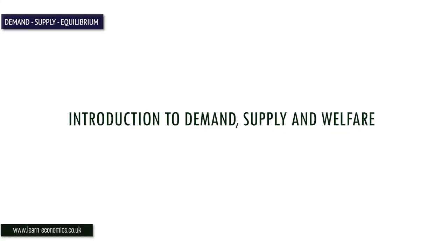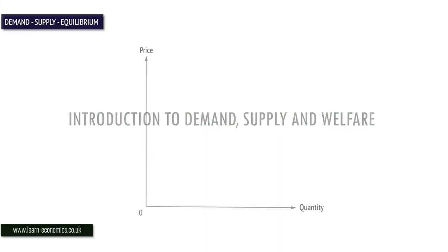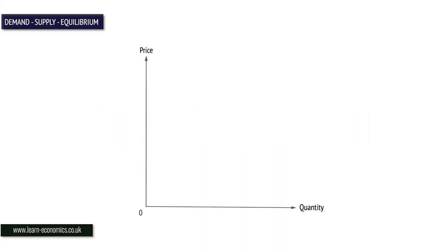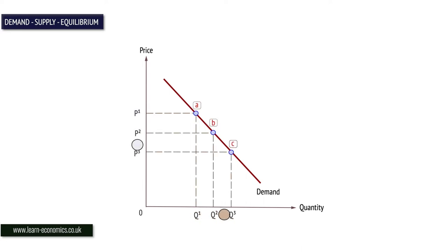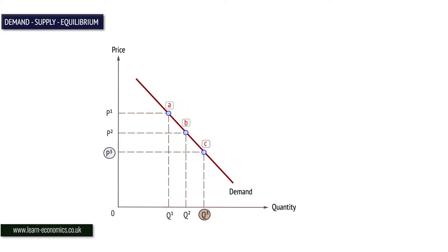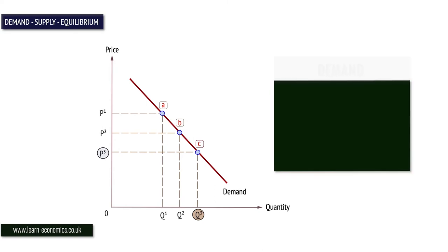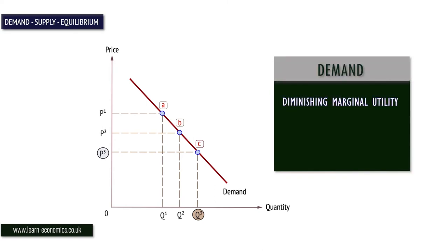Demand curves slope down from left to right. Price and quantity demanded are usually inversely related. At lower prices, consumers will consume more. Why is this? There are several answers. Marginal utility or benefit falls as more is consumed, and a lower price will encourage demand.